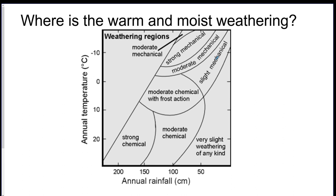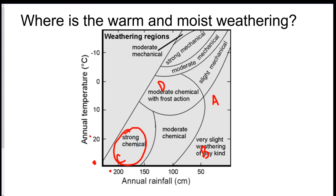Looking at this chart, where is the warm and moist area going to be? Is it location A, B, C, or D? To get to warm and moist, you want annual temperature to be hot — somewhere above 20 degrees — and then very, very high rainfall. So it looks like this corner, and look — warm and moist gives you strong chemical weathering, like we just talked about.